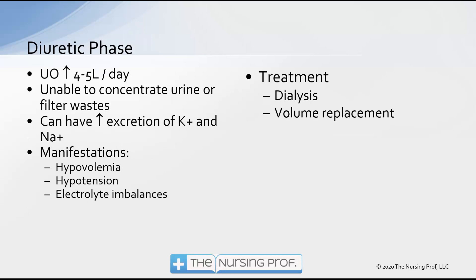The next phase is the diuretic phase. This is a good sign because it indicates the kidneys are starting to heal. However, even though we see lots of urine output, the kidneys still aren't filtering properly — like fluid passing through a punctured coffee filter, lots comes through but without adequate filtration. The patient may be unable to concentrate urine or filter out wastes normally. Unfortunately, excess excretion of potassium can occur, leaving the patient with low potassium. Symptoms may include hypovolemia, hypotension, and electrolyte imbalances. We continue dialysis since the patient can't clear waste products, but may also need volume replacement and electrolyte replacement such as potassium.